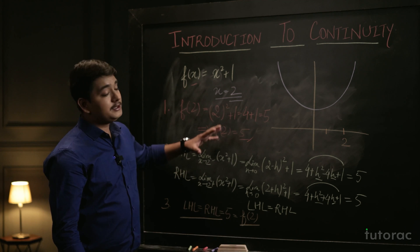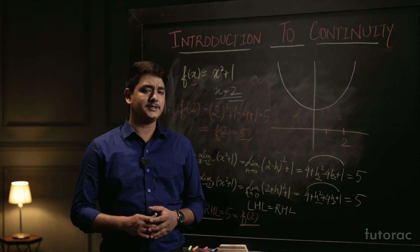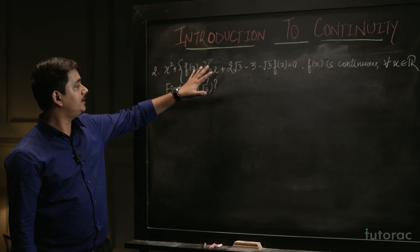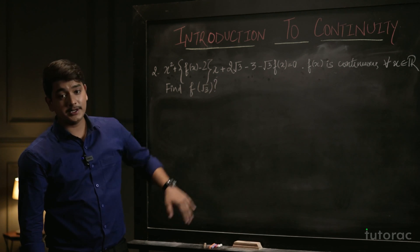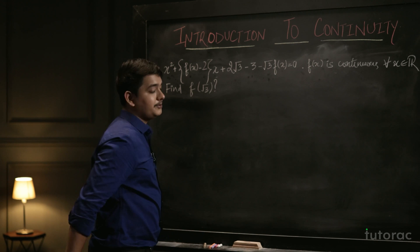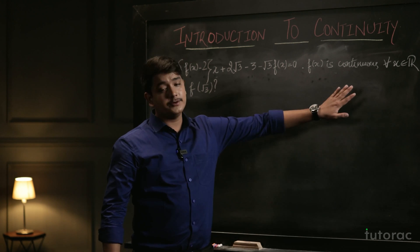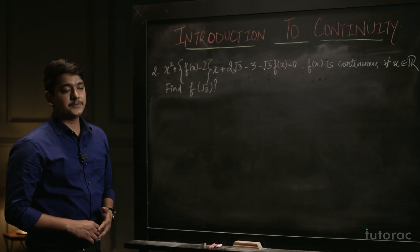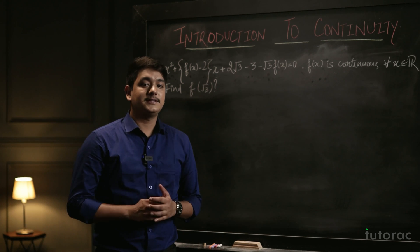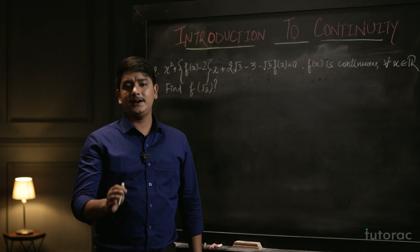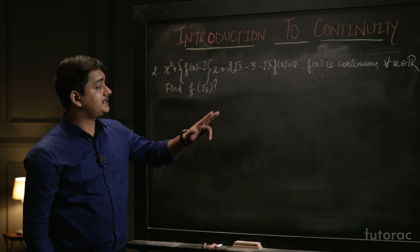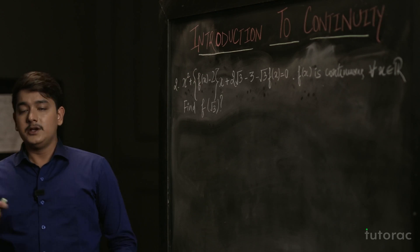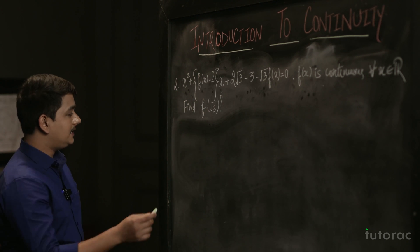Now we have a problem: the equation x² + {f(x) − 2}x + 2√3 − 3 − √3·f(x) = 0. We are given that f(x) is continuous for all x in real numbers, and we need to find the value of f(√3). Since f(x) is continuous for all x, f(x) will have a defined, real, finite value, so we can find f(√3) from this equation.